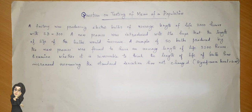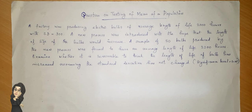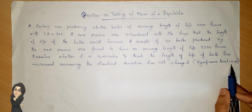So the question is as follows: a factory was producing electric bulbs with an average length of life of 2000 hours and standard deviation of 300. A new process was introduced with the hope that the length of life of the bulbs would increase. A sample of 50 bulbs produced by the new process was found to have an average length of life of 2200 hours. We have to examine whether it is reasonable to think the length of life of a bulb has increased, assuming the standard deviation has not changed, at a significance level of 0.05.